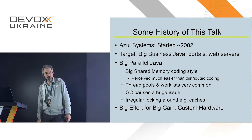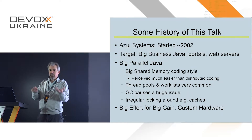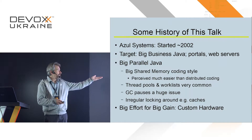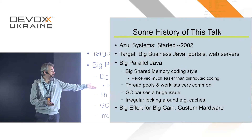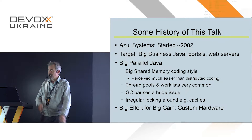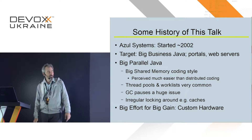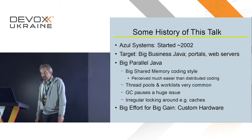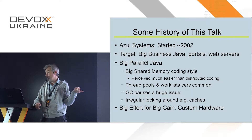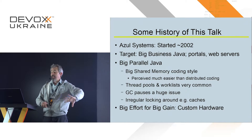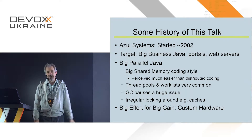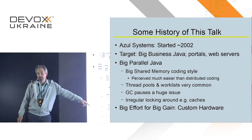Azul started in 2002. Our target was to sell to big businesses running big Java — usually web servers or portals. Big parallel Java was perceived to be much easier than distributed computing, which adds an extra layer of indirection. Thread pools, worklists, and fork-join were very common. GC pause was a big issue, and there was a lot of locking, especially around caches. So we went for a big effort for a big gain: custom hardware.